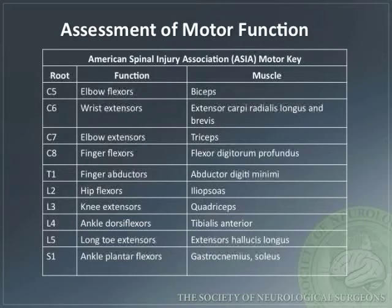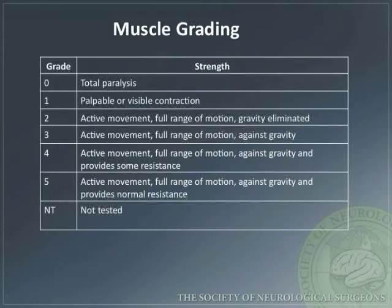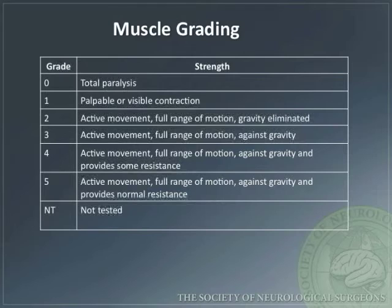Motor function can be broken down by nerve root. A table shows the nerve roots, their associated function, and innervated muscles. Muscle strength can be graded 0 to 5: 0 is total paralysis, 1 is trace contractions, 2 is movement in a plane without gravity, 3 is anti-gravity movement, 4 is anti-gravity plus some resistance, and 5 is full strength.